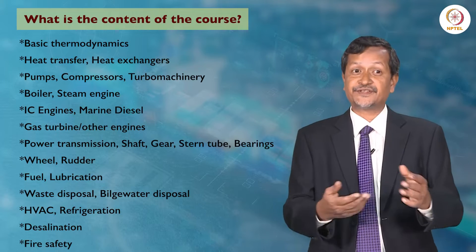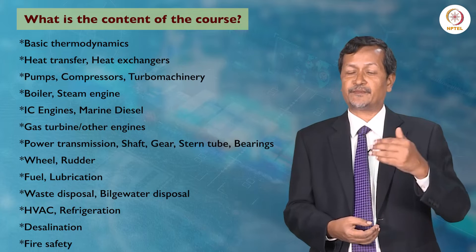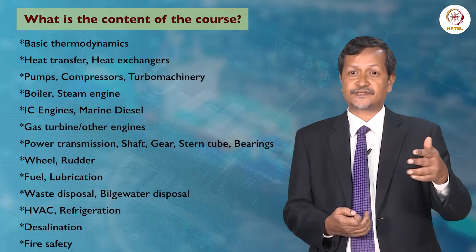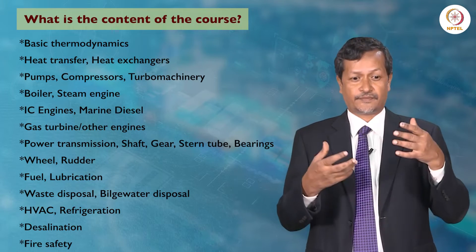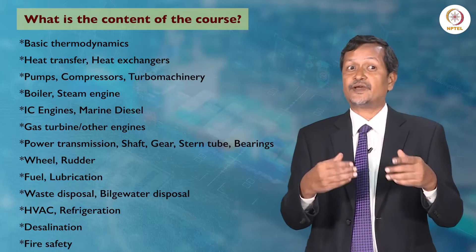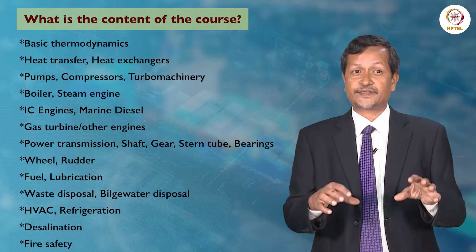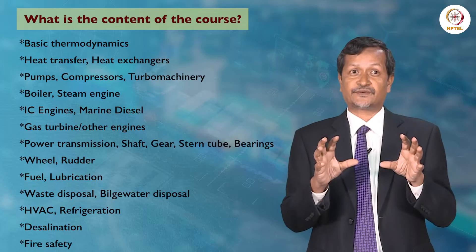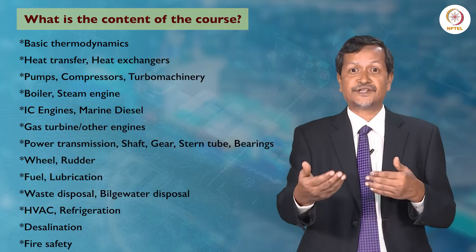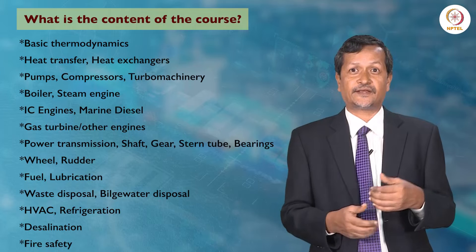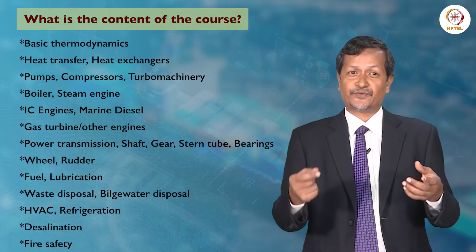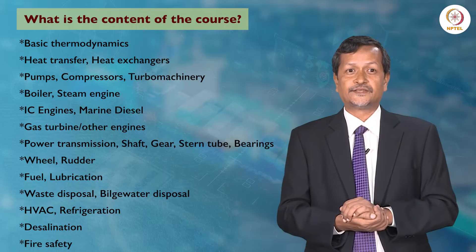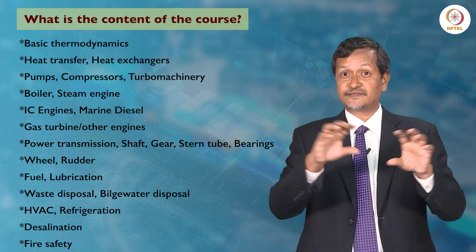Refrigeration systems are also covered. Sometimes you carry medicine, sometimes frozen items like meat or poultry being transported from one country to another — you have to refrigerate them. What are the different machinery available for refrigerating, reducing temperature so that food stuff stays preserved — also for passenger daily consumption? You must have a refrigerated system. We will discuss the mechanism of refrigeration.